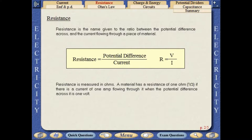Resistance is measured in ohms. A material has a resistance of 1 ohm if there is a current of 1 amp flowing through it when the potential difference across it is 1 volt.